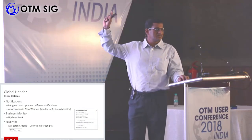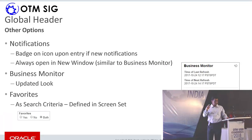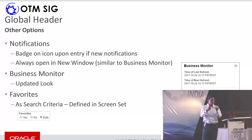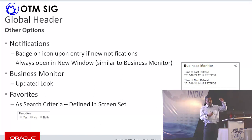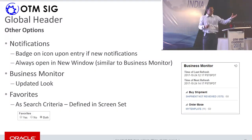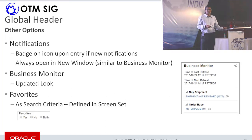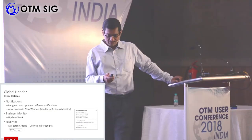Moving to notifications: within the interface alongside the homepage and global search, when there are notifications a badge indicator is shown. You can view a popup of notification types. Similarly, business monitor — previously available for saved queries monitoring exceptions — now has an updated look and feel matching the new theme introduced in 6.4. Favorites allow you to mark certain objects as favorites, switchable at a screen set level.